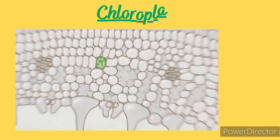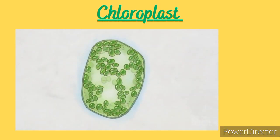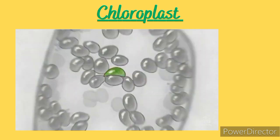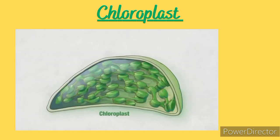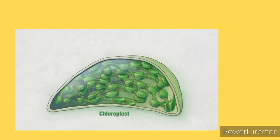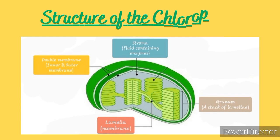Photosynthesis takes place in green plants, specifically in organelles called chloroplasts. Before we discuss the process of photosynthesis, let us first talk a bit about the chloroplasts. The chloroplast is an oval-shaped organelle with a double membrane — that is, it has an outer membrane and an inner membrane.